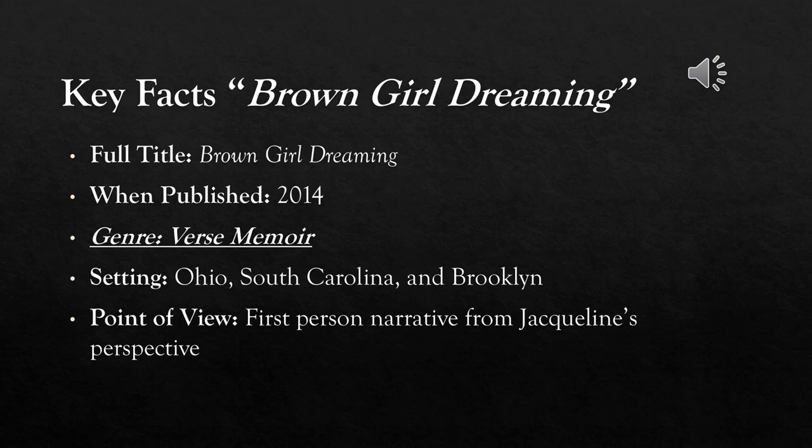Whenever we talk about 'Brown Girl Dreaming,' there are certain key facts. First, it was published in 2014. The setting combines several places: Ohio, South Carolina, and Brooklyn. The point of view is a first-person narrative from Jacqueline's own perspective. Lastly, the genre is memoir — which we will discuss more specifically in the next slide.